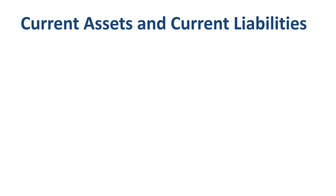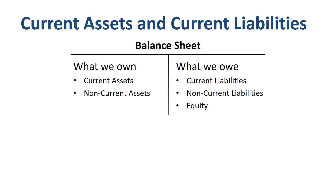Current assets and current liabilities are both groupings of accounts on the balance sheet. A balance sheet is a picture at a point in time, usually the end of the year or the end of the quarter, of what a company owns on the left and what a company owes on the right. Besides assets and liabilities, you will also find a group of accounts on the right-hand side called equity, which represents the book value of the shareholder capital.